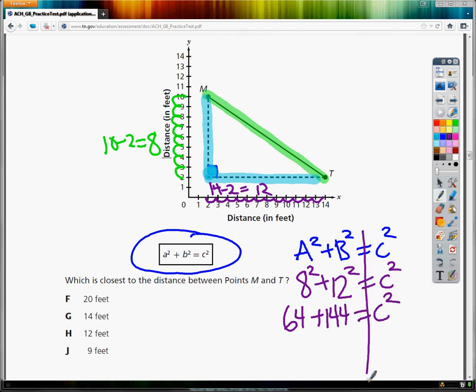I'm solving an equation here, so I'm going to combine like terms on the same side. So 64 plus 144 gives me 208. And now I'm down to that last step. It says C squared. I can't leave C squared, because C squared would be this big gigantic square that I can't even draw on the board.